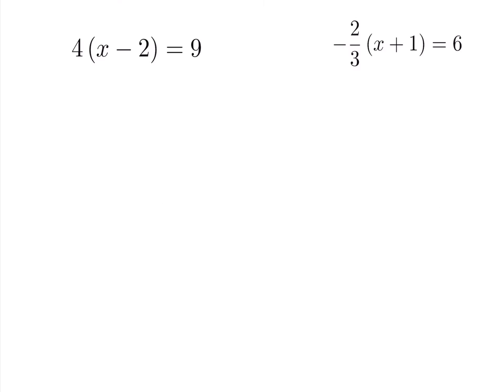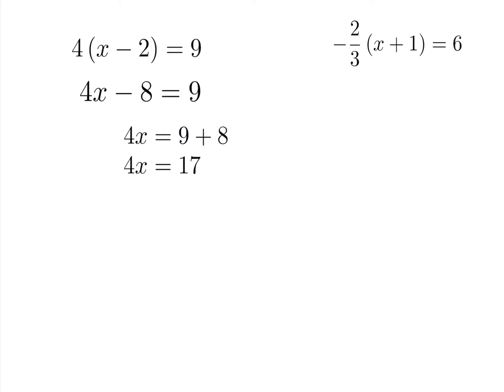Now we have distribution involved. The coefficient 4 is being multiplied by a binomial, so we distribute the 4 into the brackets: 4 times 1x is 4x, and 4 times negative 2 is negative 8, giving 4x minus 8 equals 9. We do not distribute the 4 to the 9. Adding 8 to both sides and then dividing across by 4 gives x equals 17 over 4. Since 17 is prime, this is already in lowest terms — always check that your final answer is reduced.